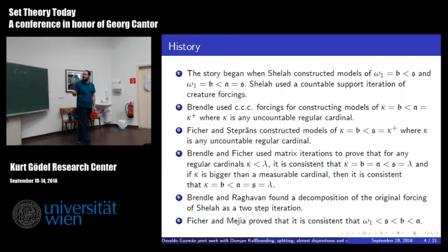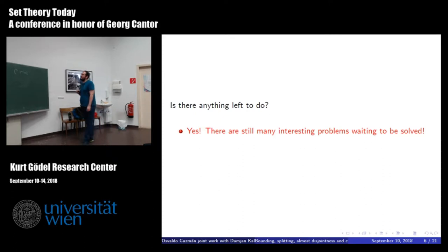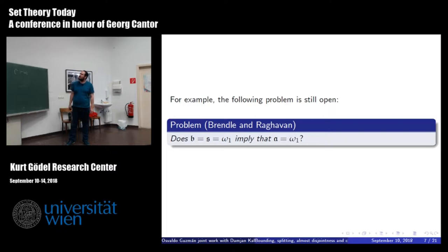And also, Berra and Diego proved that it's consistent to have omega_1 less than s less than b less than a. So after all of this, you may say, is there anything more to do? Yeah, there are still many problems regarding this invariance. So one question is, of Brendle and Raghavan, if b equal s equal omega_1, imply that a is omega_1. This is related to a problem of Roitman, which says that if d is omega_1, if that implies that a is omega_1. So these questions are still open.